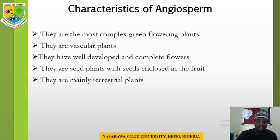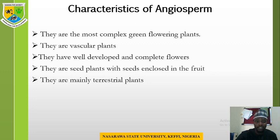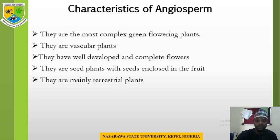Here are some of the characteristics of angiosperms. They are the most complex and most advanced green flowering plants. They are vascular plants with well-developed and complete flowers. They are seed plants with seeds enclosed in the fruit. The difference between angiosperms and gymnosperms is that both bear seeds, but the seed of an angiosperm is enclosed in the fruit, while the seed of a gymnosperm is exposed.